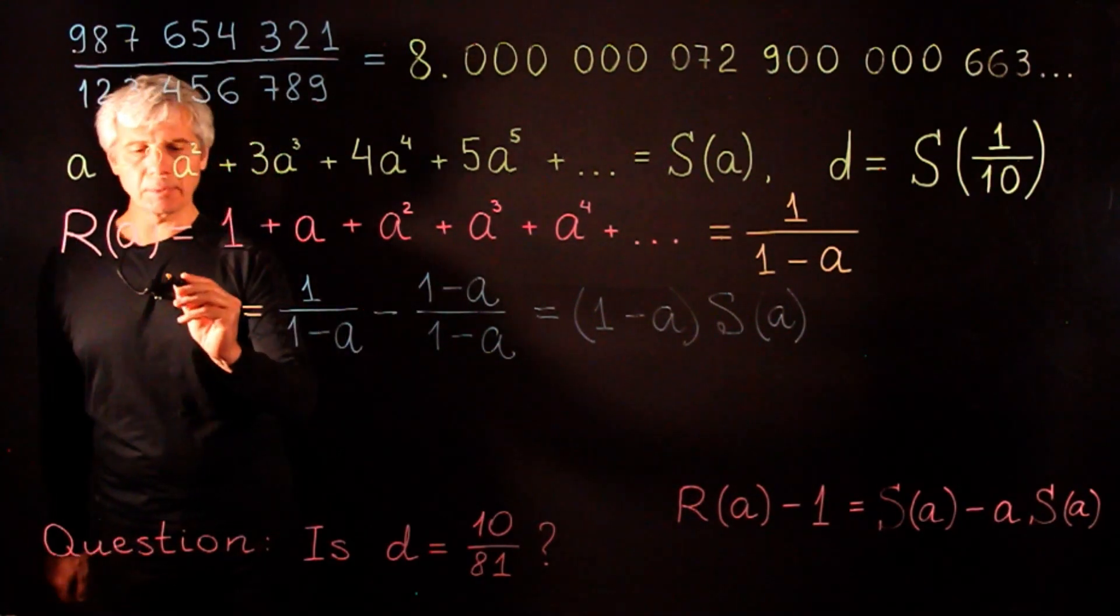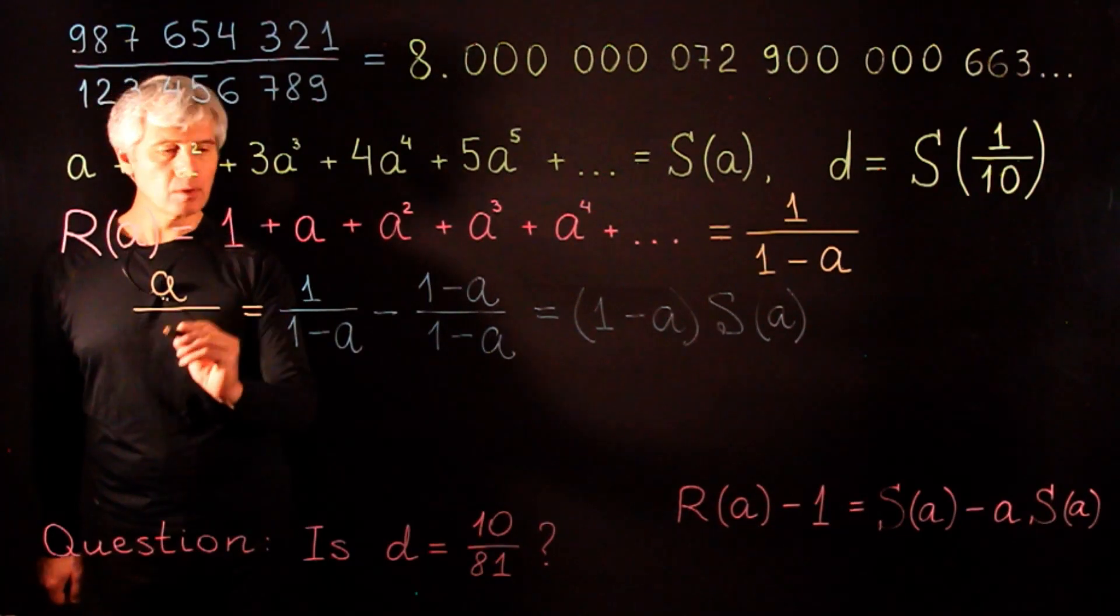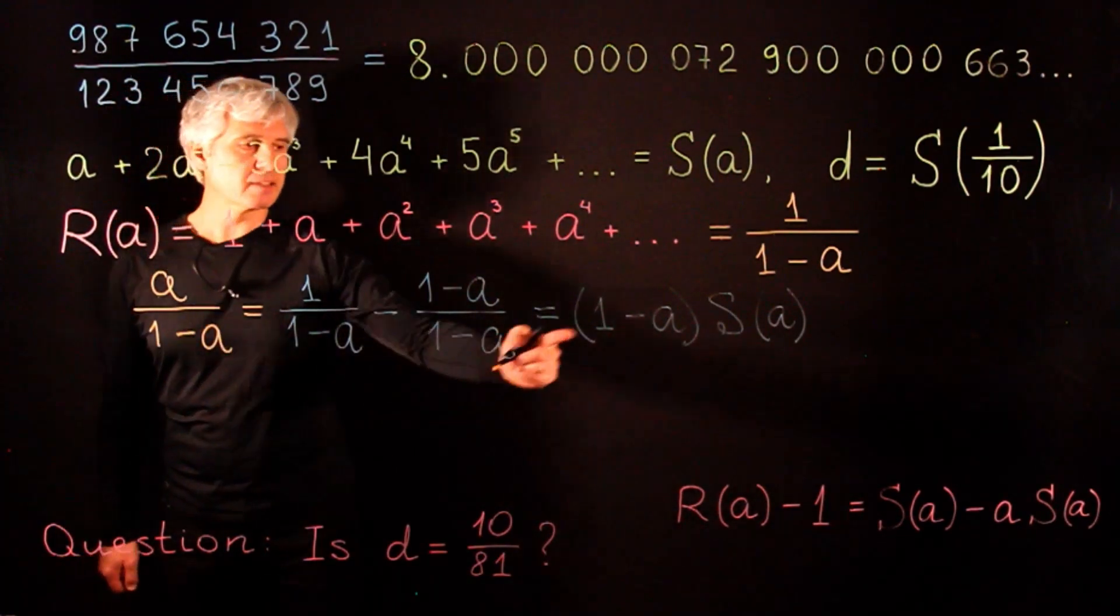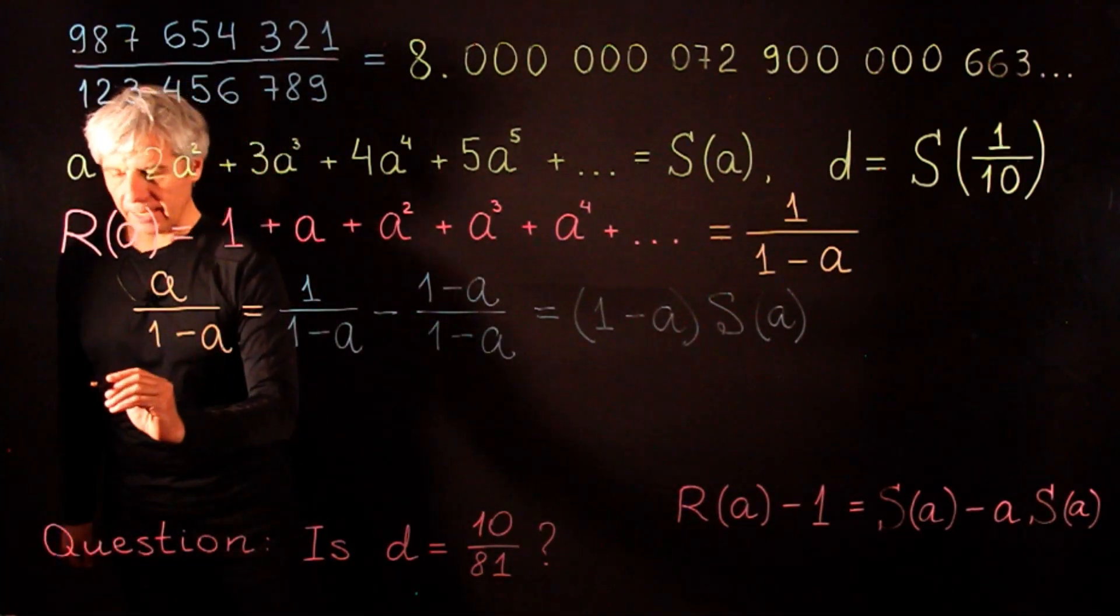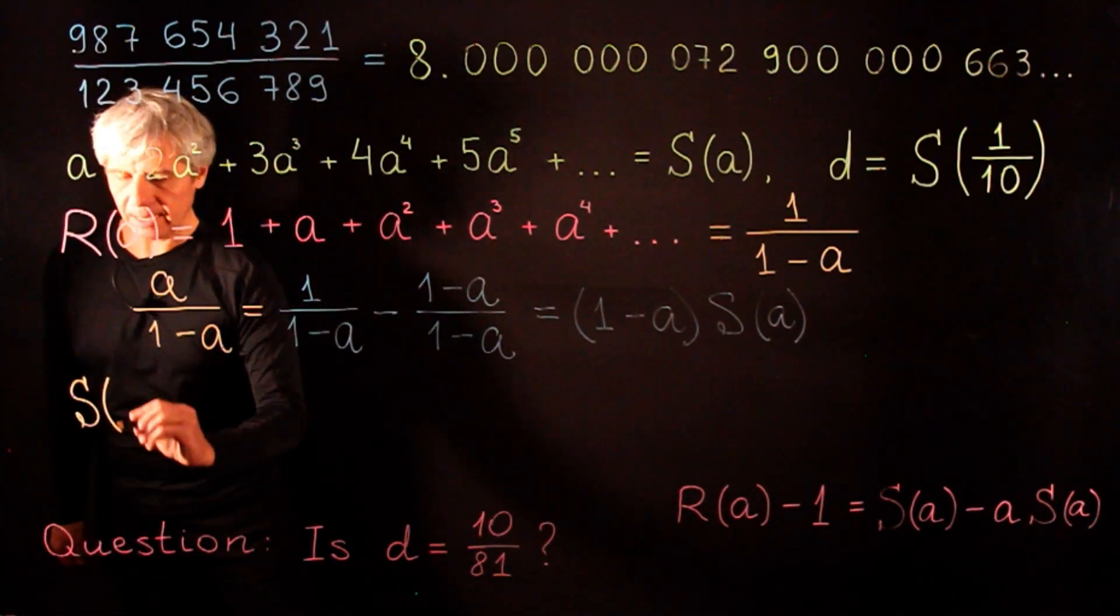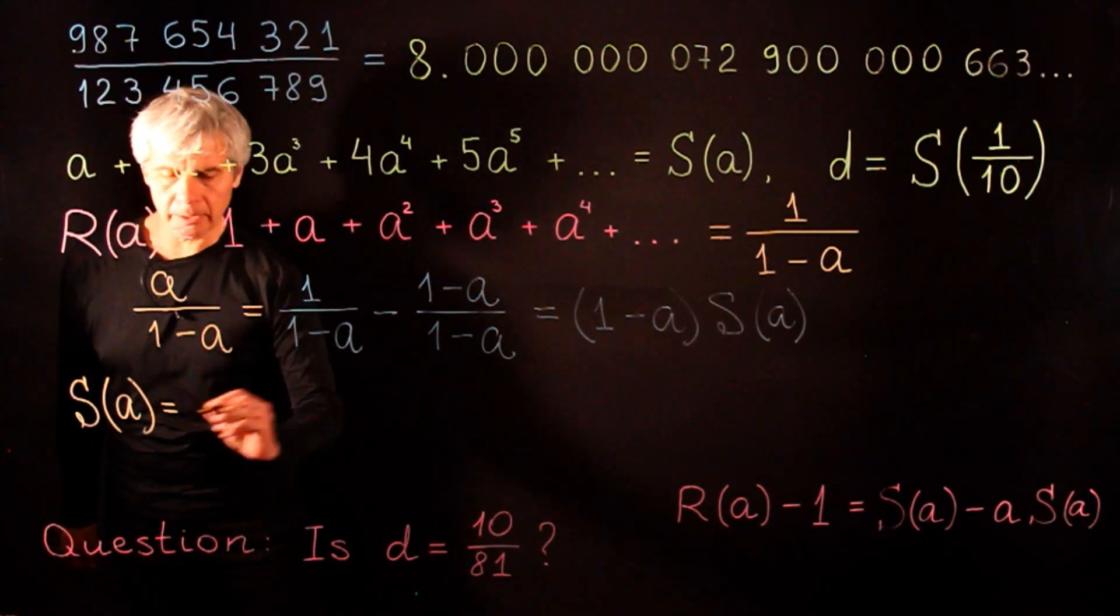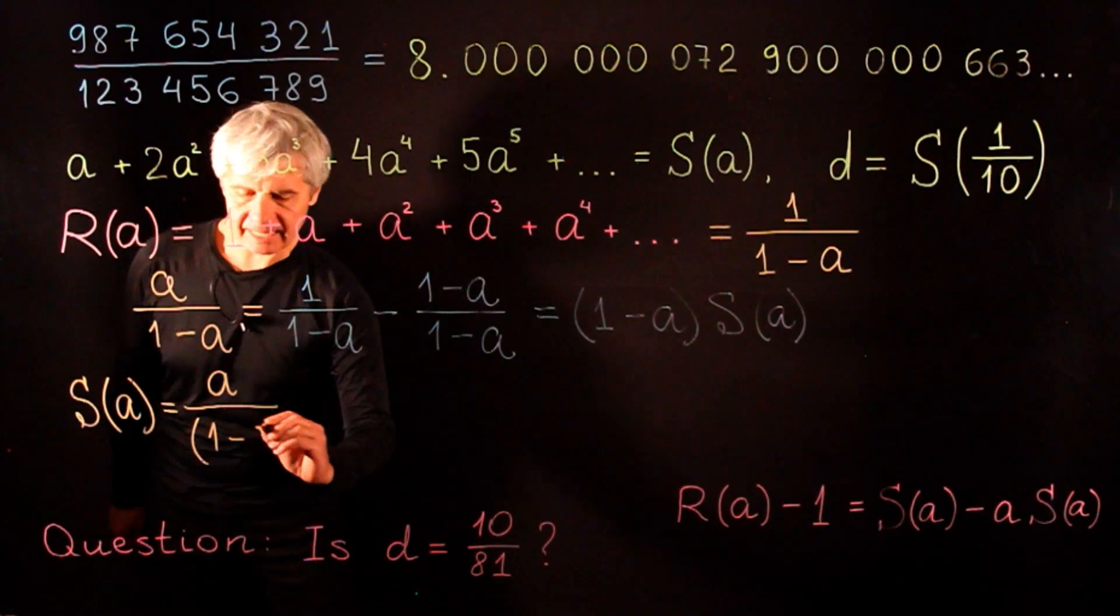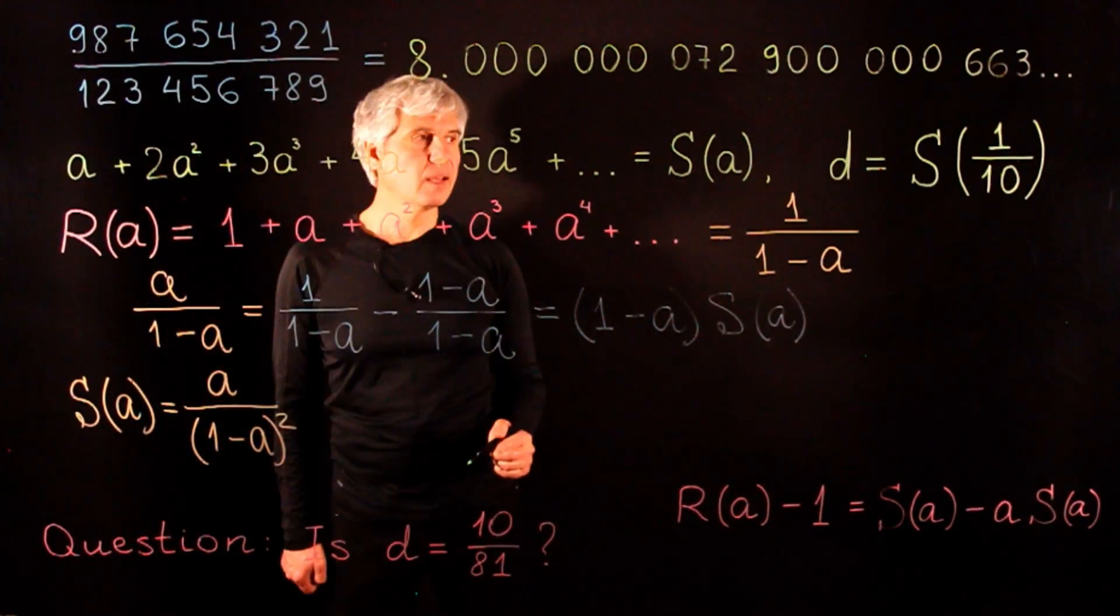In the left hand side these two ones will cancel and a comes with a double minus. So this simplifies to a over 1 minus a. Finally, dividing both sides by 1 minus a we get the value of s of a. s of a is equal to a over 1 minus a squared. And voila!